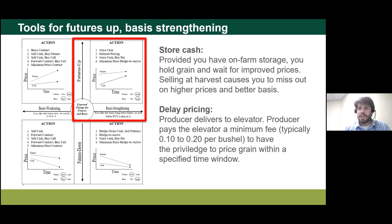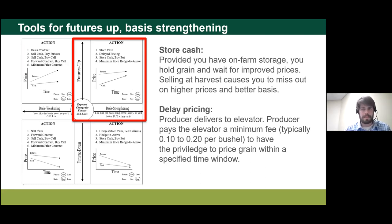Regarding 'store cash' from an earlier question: that means you have the grain and you're just storing it on farm — it's unpriced grain. The grain is essentially money eventually; it just hasn't been converted yet. You're storing it and waiting for prices to rise to sell it in the cash market. Sometimes there's a negative connotation around unpriced grain, but in the quadrant where you think prices are going to rise and basis is going to strengthen, you want unpriced grain because you want to take advantage of those future increases.